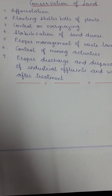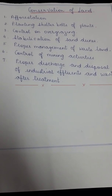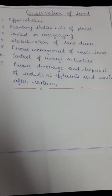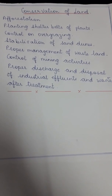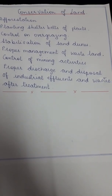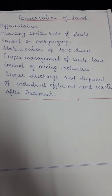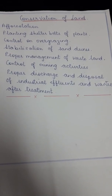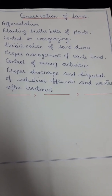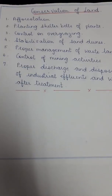Fifth is proper management of wasteland. Sixth is proper discharge and disposal of industrial effluents and waste — only after treatment should the waste and effluents be discharged, which will save our land from getting polluted. Our land is very precious, and therefore we should do our utmost to conserve it so that future generations can also have proper use of the land.